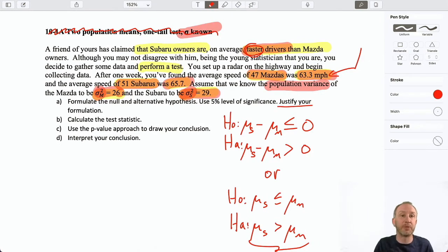Now, justify our formulation. Well, if our evidence supports the alternative hypothesis, I have evidence to support my friend's claim that Subarus are on average faster than Mazdas. If our evidence supports my null hypothesis, well, now we can refute my friend's claim. We do not have evidence to support that statement that Subaru drivers are faster. Now it's all the same as a Chapter 9 problem.